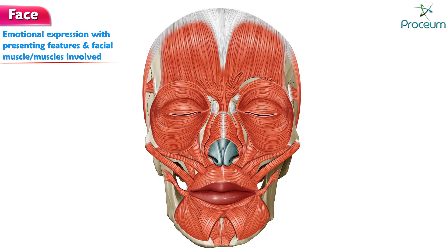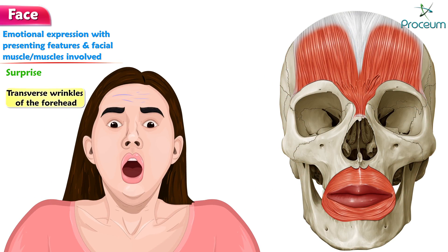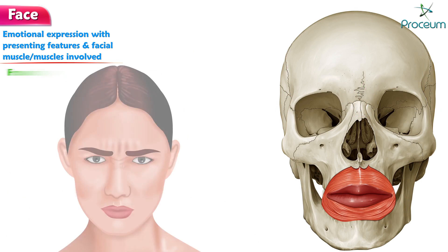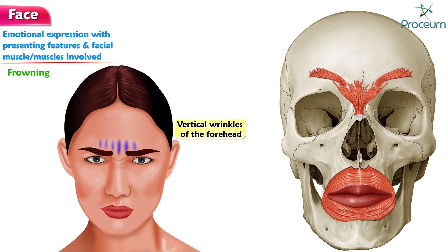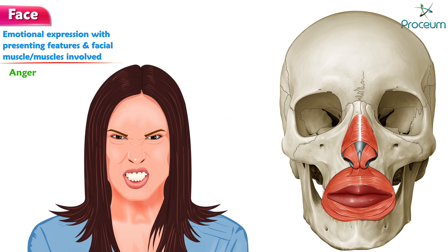Emotional expression with presenting features and facial muscles involved. Surprise: transverse wrinkles of the forehead — frontalis. Frowning: vertical wrinkles of the forehead and transverse wrinkles across the root of the nose — corrugator supercilii and procerus.